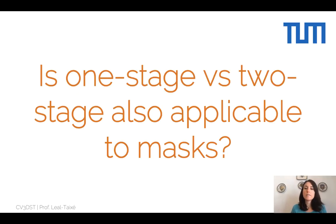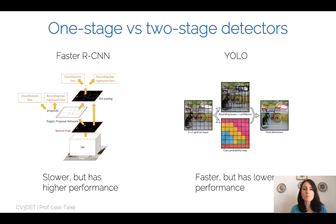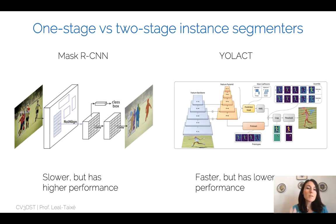Mask R-CNN derives from Faster R-CNN, a two-stage detector. We also saw one-stage detectors which are faster. Can we apply the one-stage concept to masks? In detection we had one-stage methods like YOLO — faster but lower performance — versus two-stage detectors like Faster R-CNN — slower but higher performance. For instance segmentation, Mask R-CNN is the two-stage method (slower, higher performance), while the one-stage counterpart is YOLACT. It wasn't until 2019 that YOLACT appeared — it's not easy to extend YOLO to predict masks instead of boxes.